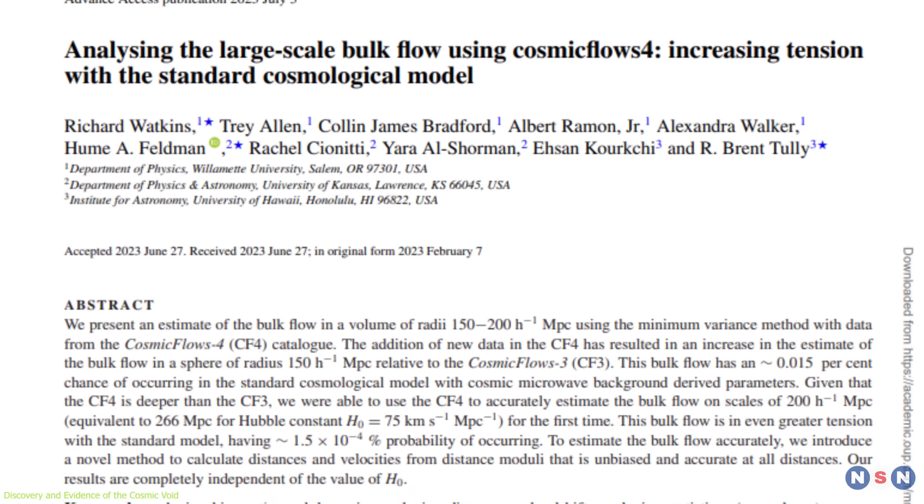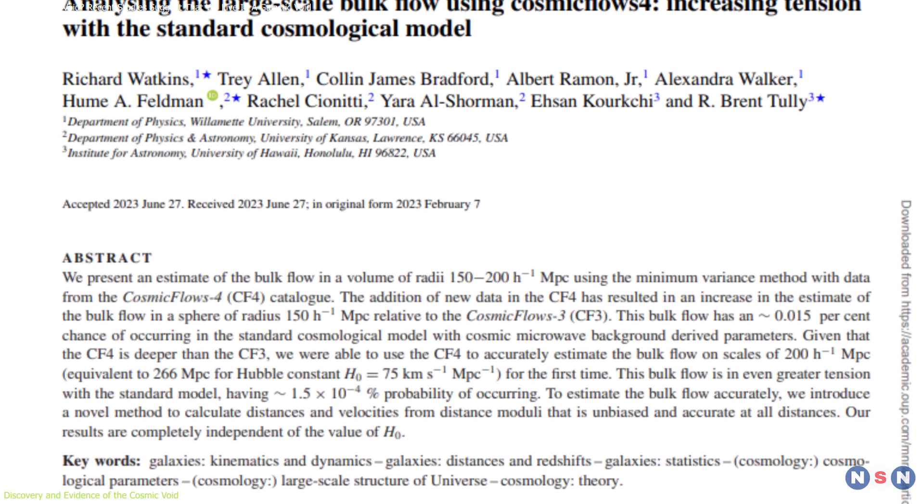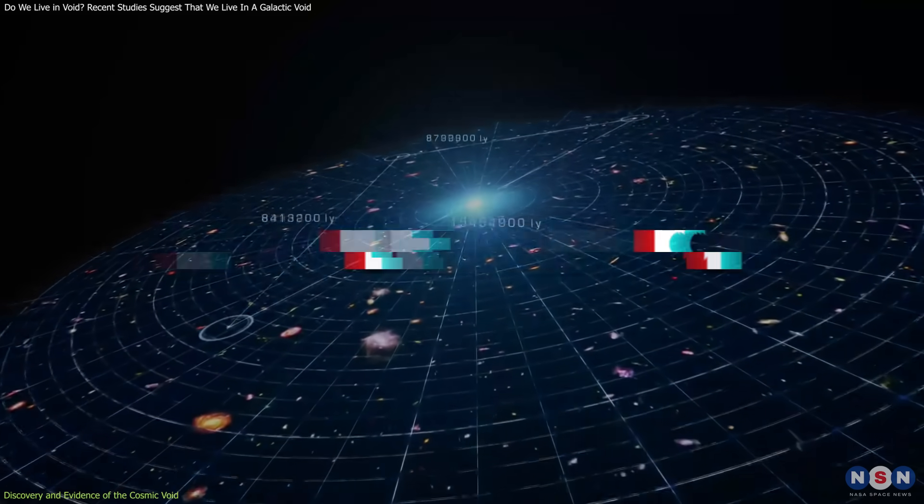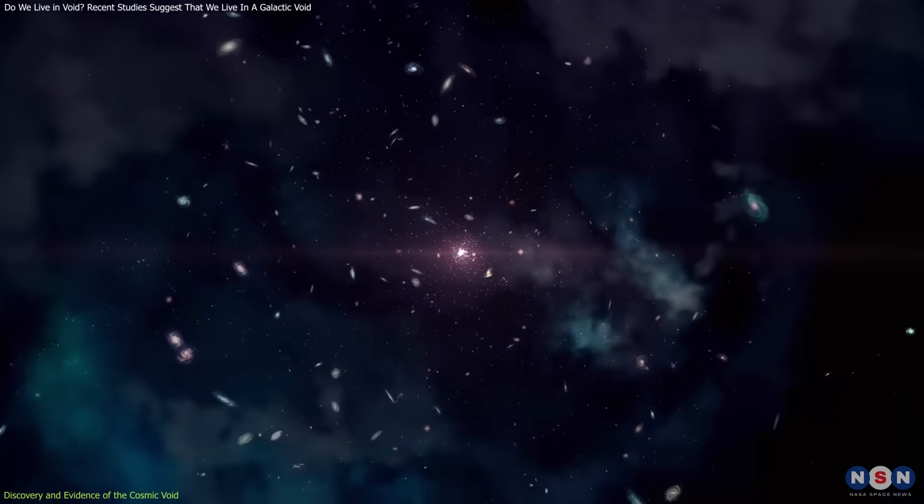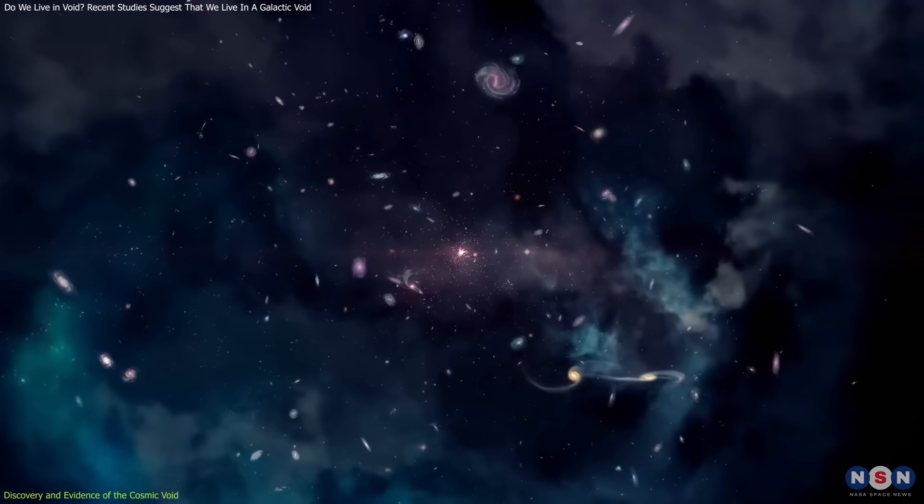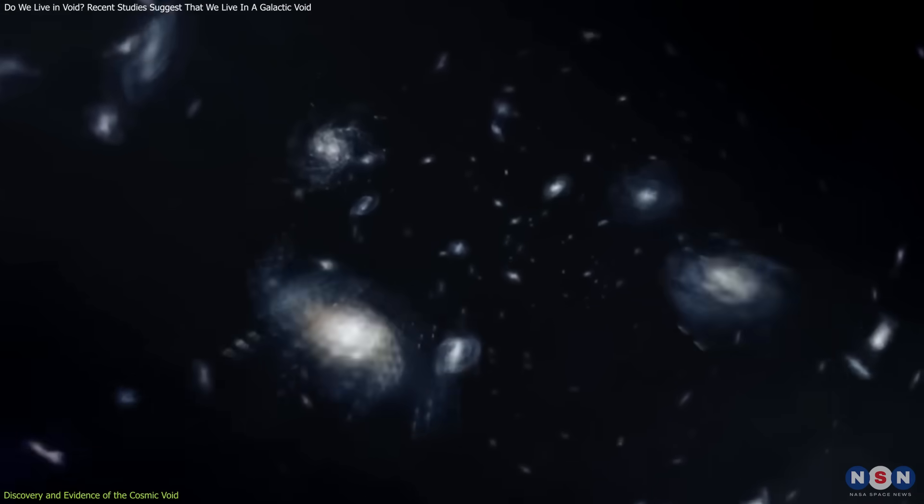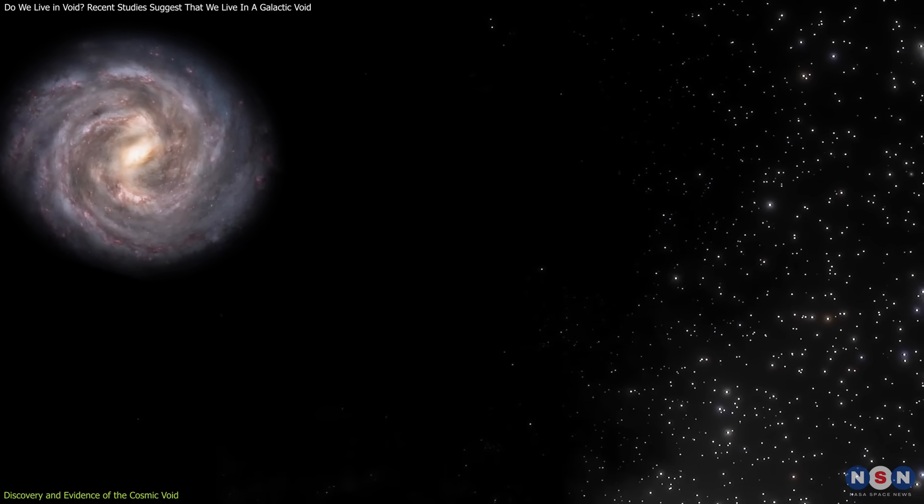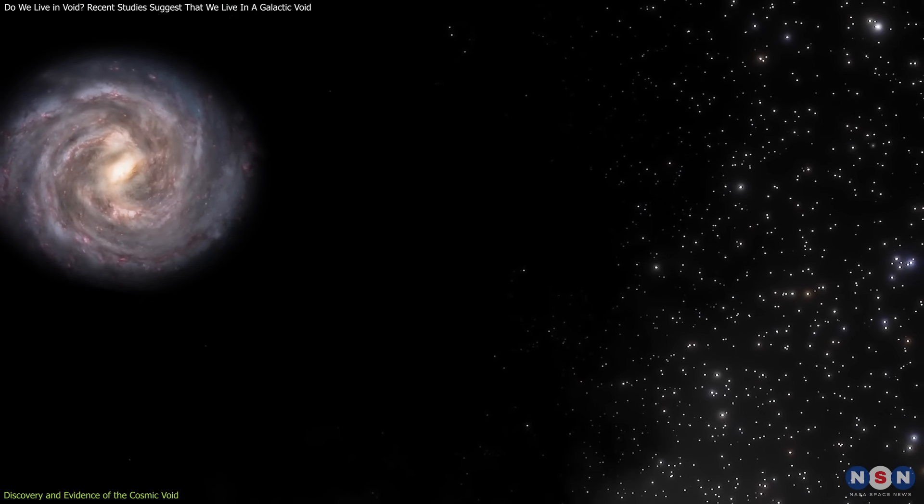Moreover, Indranil Bannock's recent study published in the Monthly Notices of the Royal Astronomical Society introduces a provocative perspective by linking this void to the ongoing mystery of the universe's expansion rate, known as the Hubble Tension. Observations reveal that galaxies inside this void seem to move away faster than galaxies outside of it. This suggests that our measurements of how fast the universe is expanding might be off because of our special position inside this huge empty space.